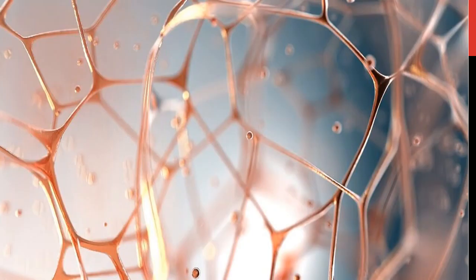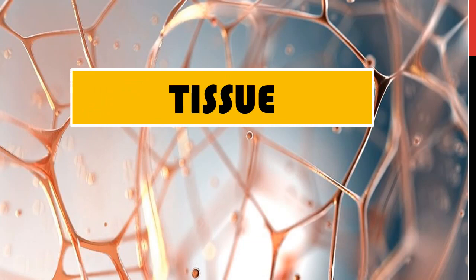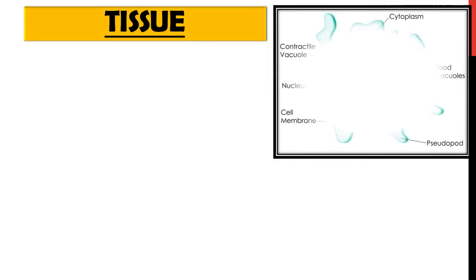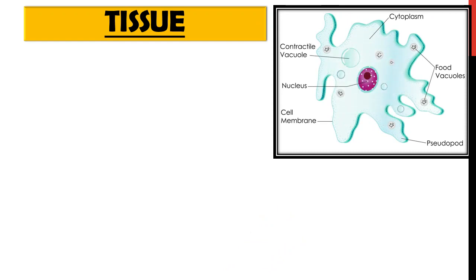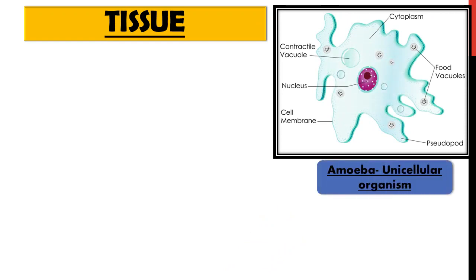In the case of amoeba, a unicellular organism, all functions are performed by the organelles of that single cell. Amoeba is unicellular — only a single cell — and it has different organelles like the nucleus, cytoplasm, cell membrane, pseudopodia, and food vacuoles. All functions from nutrition to excretion take place within that one single cell.